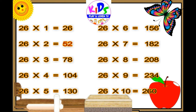26 6s are 156, 26 7s are 182, 26 8s are 208, 26 9s are 234, 26 10s are 216.